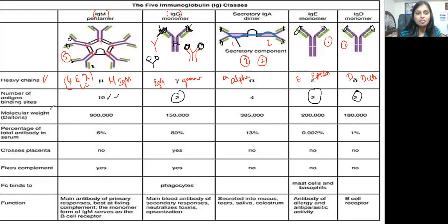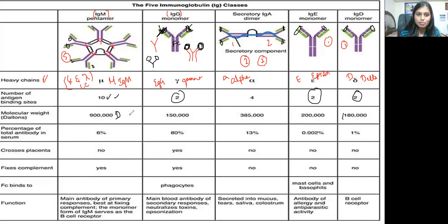Now let's come to molecular weight. IgM is 900,000 daltons; IgG is 150,000 daltons; IgA is 385,000 daltons; IgE is 200,000 daltons; and IgD is 180,000 daltons. When it comes to molecular weight, IgM has the highest, followed by IgA, then IgE, then IgD, and finally IgG, which has the least molecular weight.